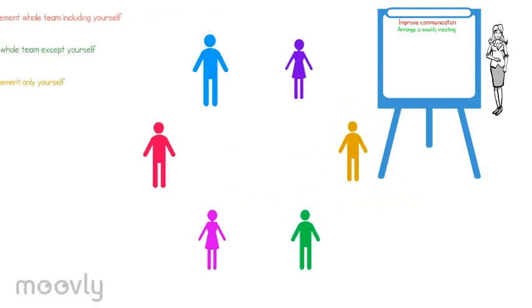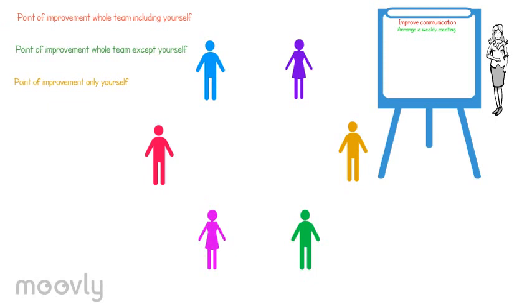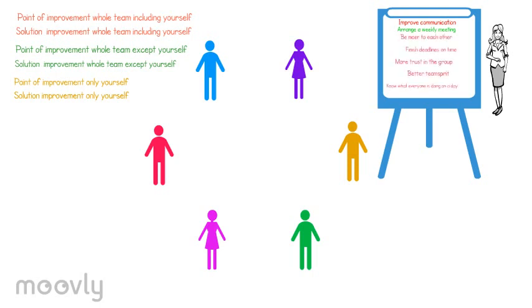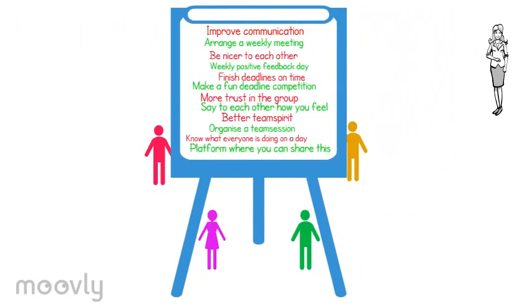Let everyone share their 3 points of improvement and select 3 people from the group to come up with suggestions for each point. Eventually there will be the amount of points of improvement and solutions for the whole team on the whiteboard equal to the number of people in the group.